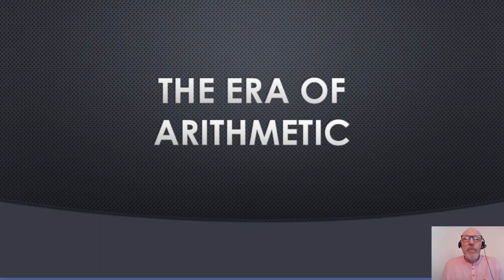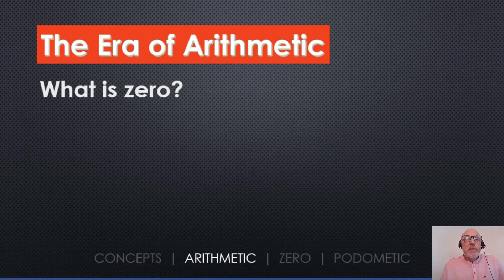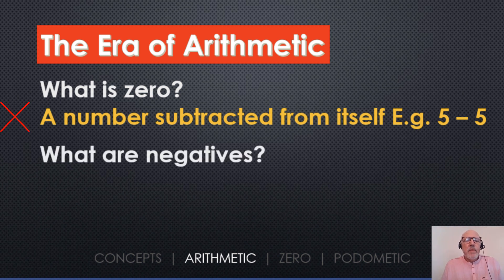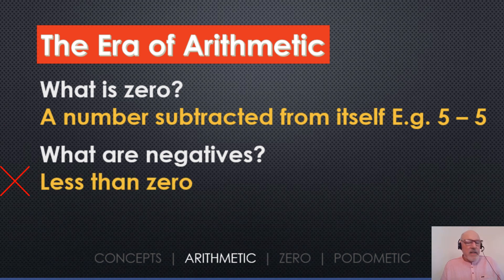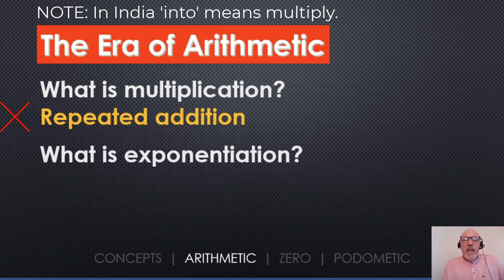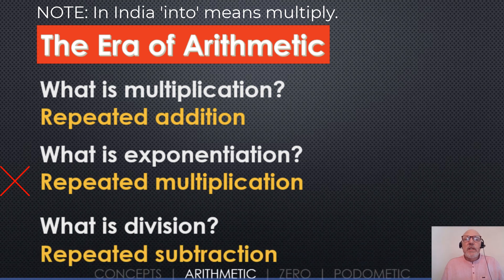Moving on to the error of arithmetic — and I also mean that in its pejorative sense, because I'm not too impressed with the way that mathematics has evolved over the last 1,400 years. Let me ask some questions. What is zero? Zero is defined usually as a number subtracted from itself — for example, five minus five. What are negatives? Negatives are simply less than zero. What is multiplication? Repeated addition. What is exponentiation? Repeated multiplication. What is division? Repeated subtraction. These are the standard responses.